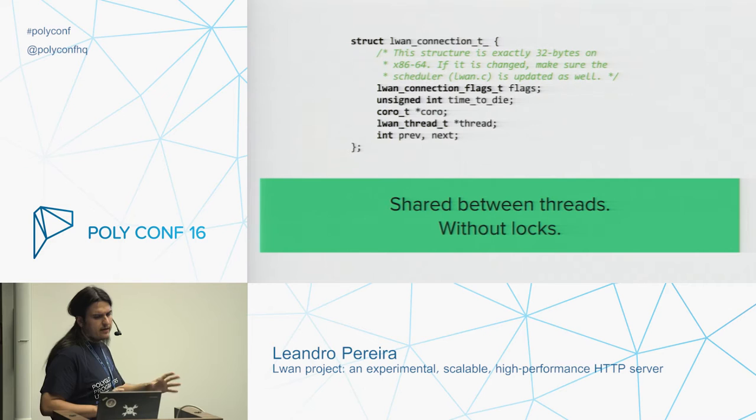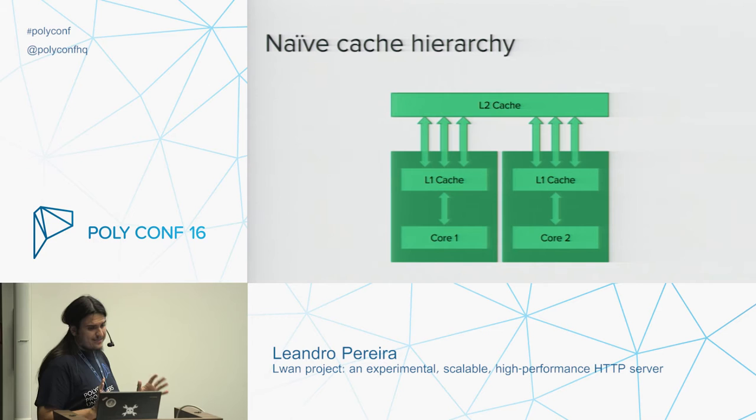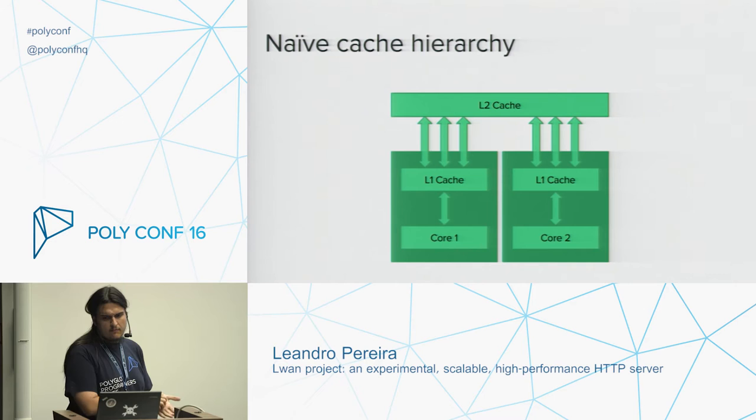The comment hints that this structure being 32 bytes long is somehow important. To understand why, let's consider this diagram of a naive multi-core CPU architecture — specifically its cache hierarchy. At the top there's memory, and in this diagram the L2 cache is shown in between two cores.